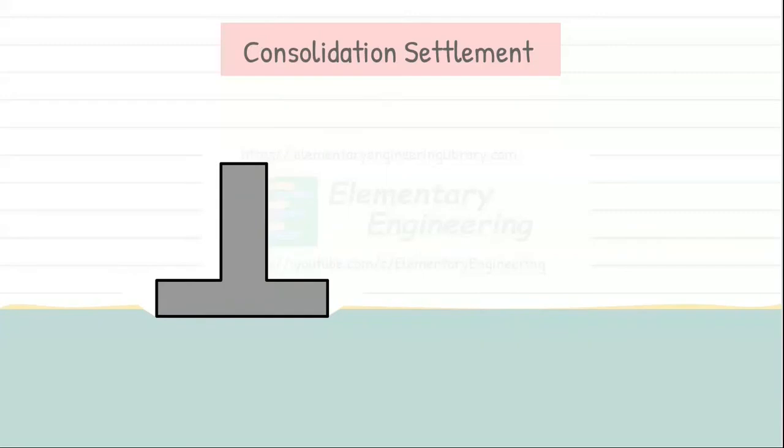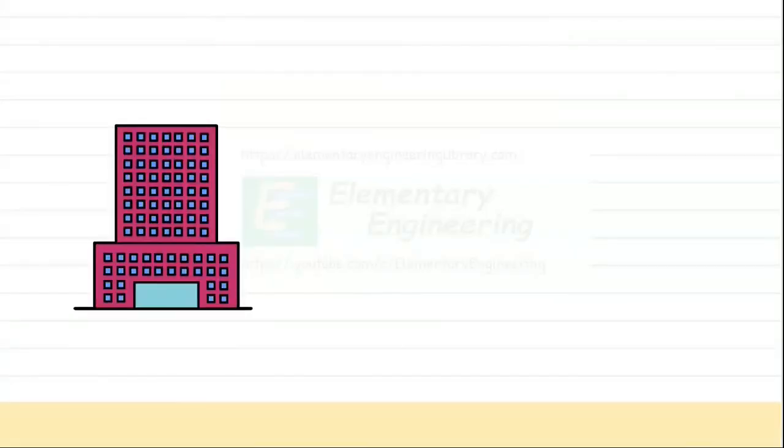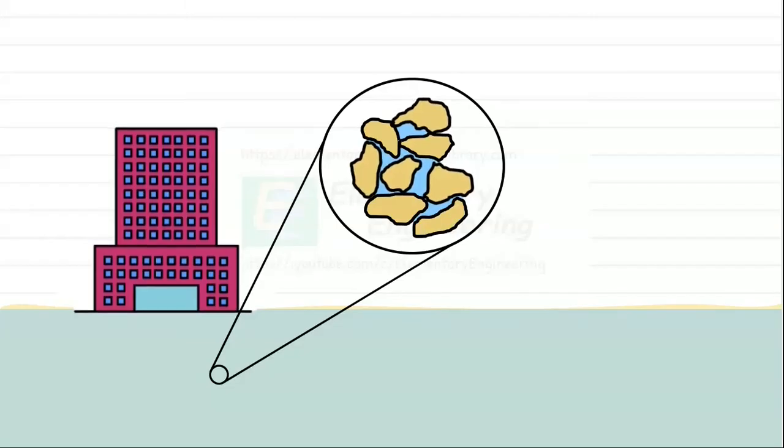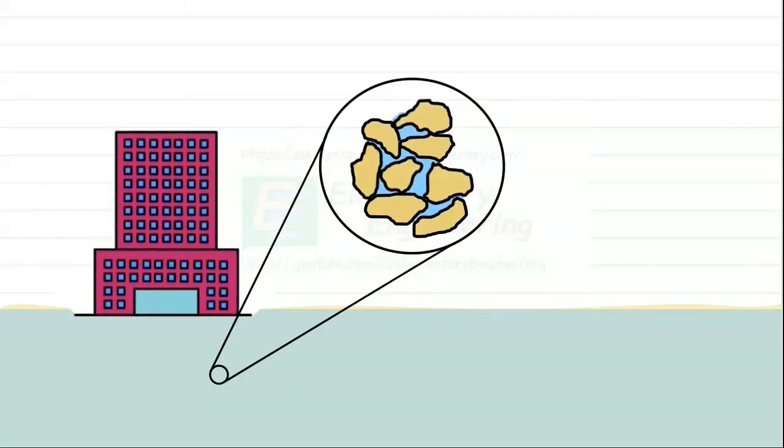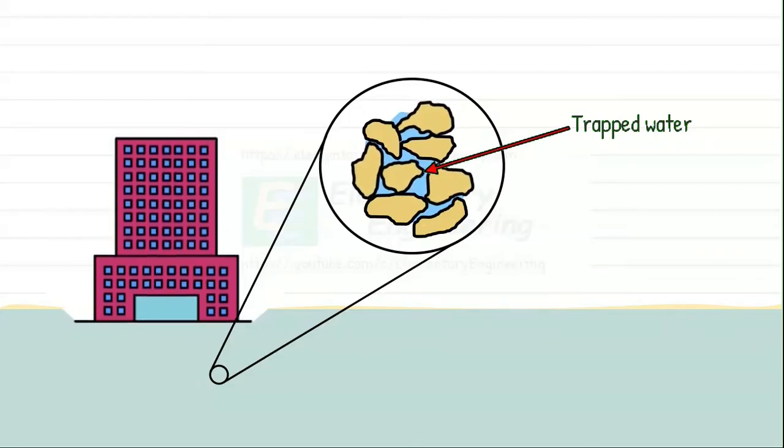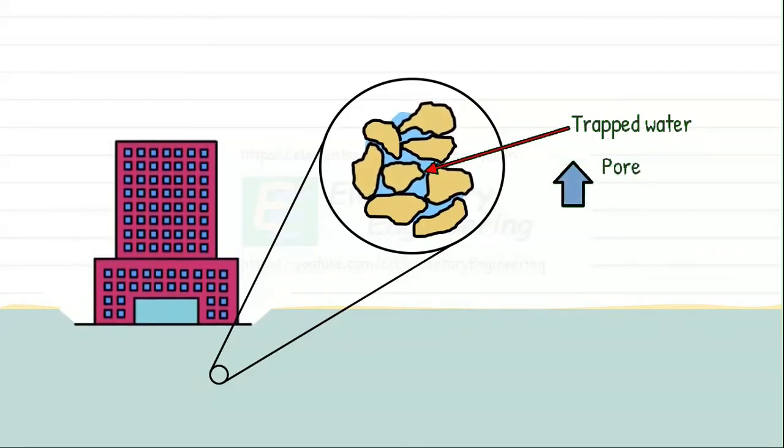Consolidation settlement in particular refers to the settlement of soil that occurs because of the dissipation of excess pore water pressure in saturated soils. It begins when a load is applied to the soil, such as the weight of a structure or an increase in the groundwater level. The soil particles begin to rearrange to bear this additional stress. This traps the water in the voids between particles and causes a temporary rise in pore water pressure.